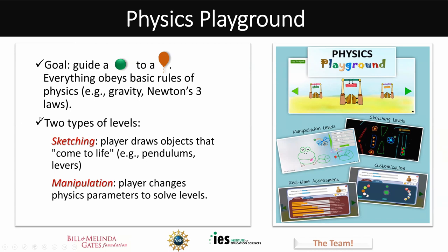We created two types of levels. The first was a sketching interface where a person draws objects on screen using a mouse or stylus with colored markers that come to life to solve the problem — in the process inventing simple machines like ramps, pendulums, and springboards. A couple years in, we added manipulation levels, where a person manipulates sliders to change physics parameters like mass, gravity, and air resistance. Players can solve problems in many different ways.